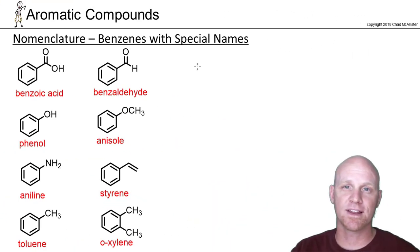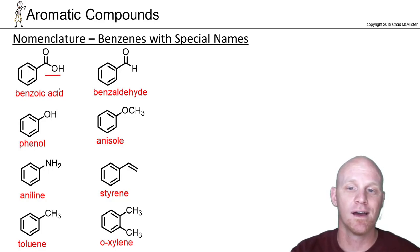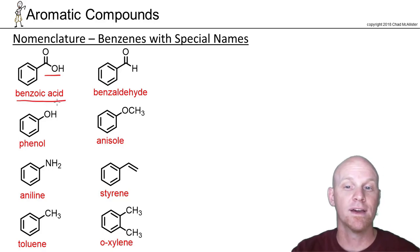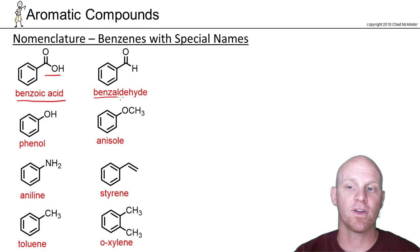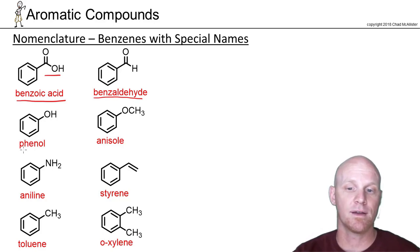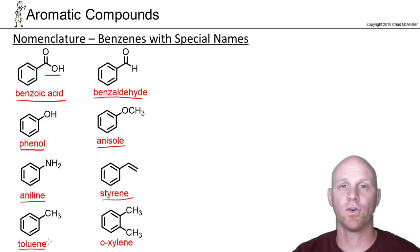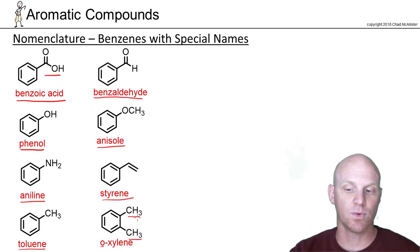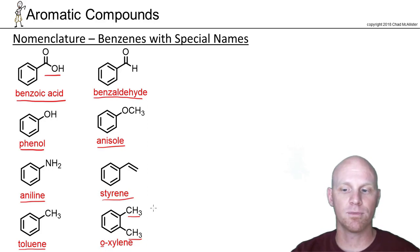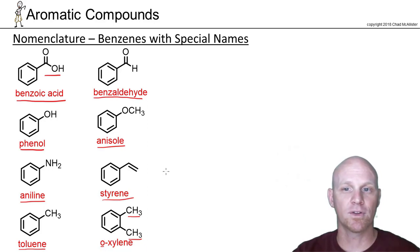Several benzene rings have special names for certain substituents. A carboxylic acid attached to benzene is benzoic acid (long form: benzenecarboxylic acid). An aldehyde group gives benzaldehyde (benzene carbaldehyde). Hydroxybenzene is phenol; methoxybenzene is anisole; aminobenzene is aniline; a vinyl group on benzene is styrene; and methylbenzene is toluene. When you've got two methyl groups, that's xylene — for example, o-xylene. You should know that dimethylbenzene is called xylene.